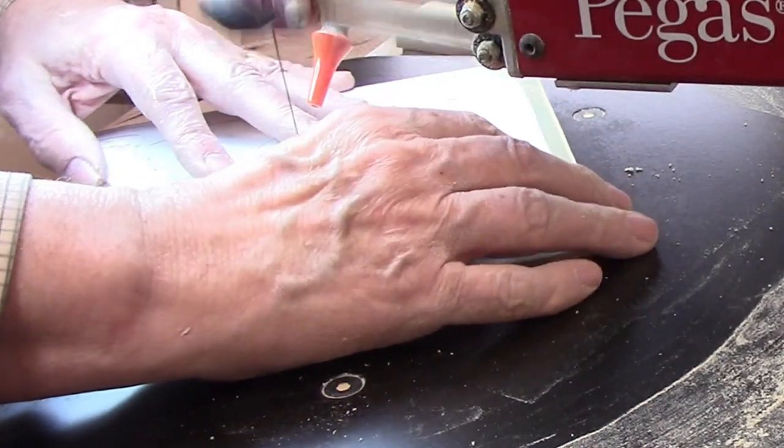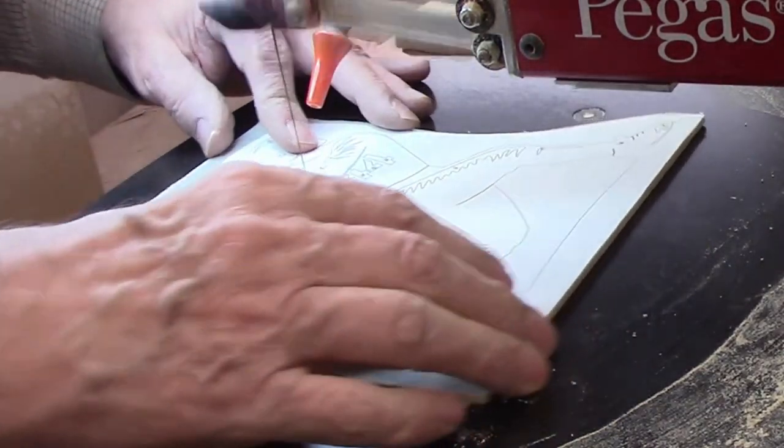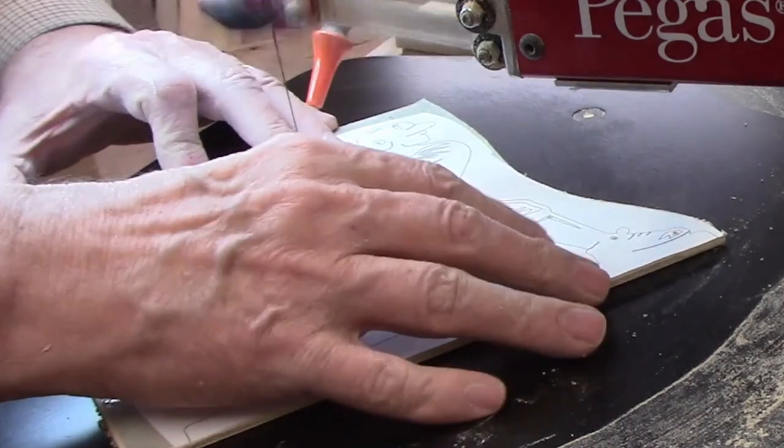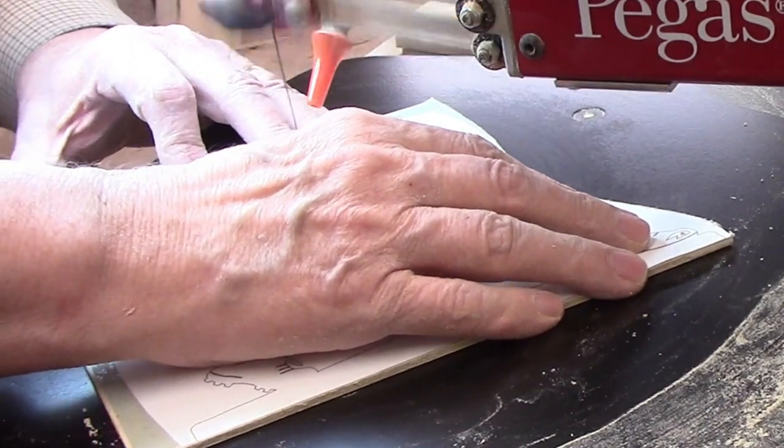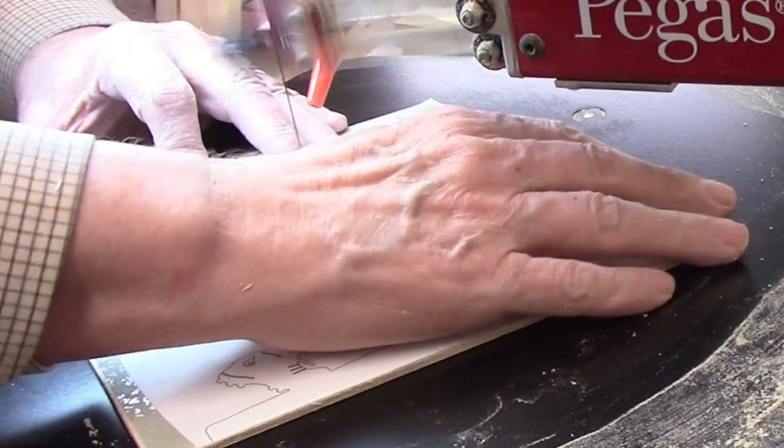The pattern calls for quarter inch thick material, but I had recently purchased some 1-8th thick 12x12 basswood squares, so I decided to see how the pattern worked on that material.